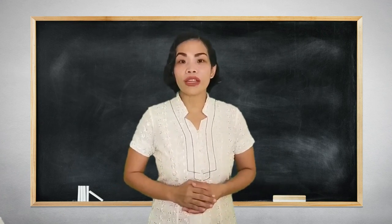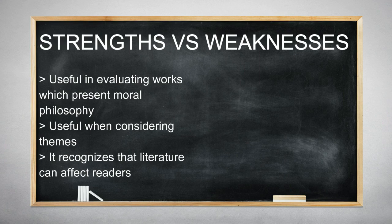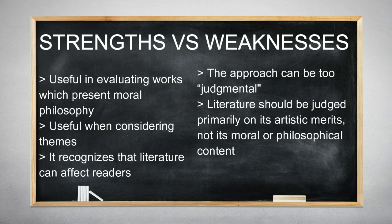What are the strengths and weaknesses of the moral philosophical literary approach? Strengths: this approach is useful in evaluating works which present an obvious moral philosophy; it is useful when considering themes such as man's inhumanity to man in Mark Twain's Huckleberry Finn; it does not view literature merely as art isolated from moral implications; and it recognizes that literature can affect readers whether subtly or directly, and that the message of a work is important. Weakness: the approach can be too judgmental, and some believe literature should be judged primarily on its artistic merits, not its moral or philosophical content.